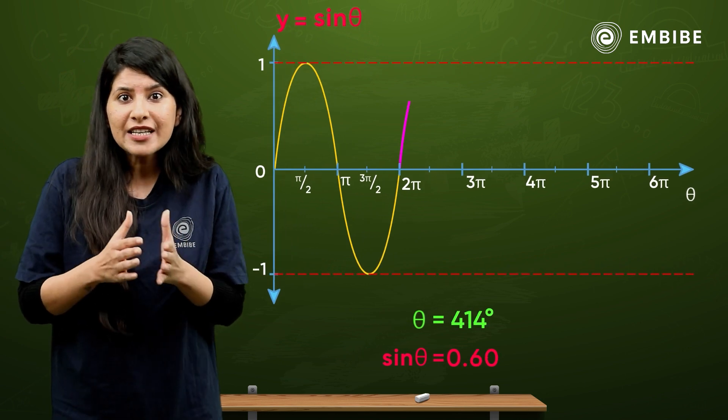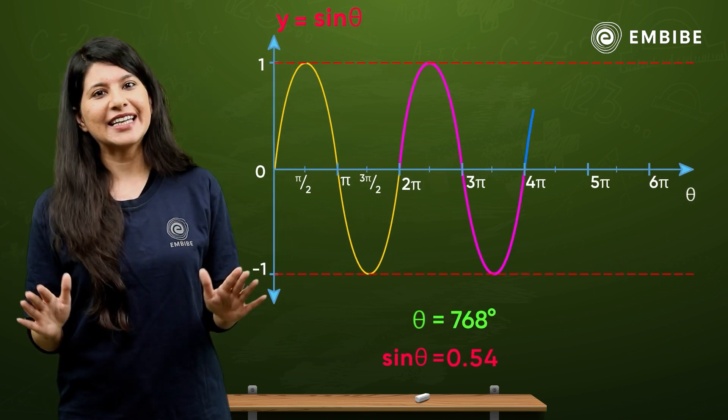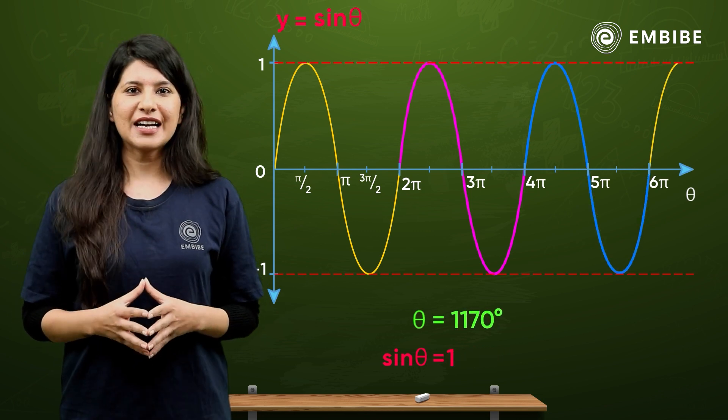Now, from 2 pi to 4 pi, this will be repeated. And these layers will keep going. So, this is our sine function graph.